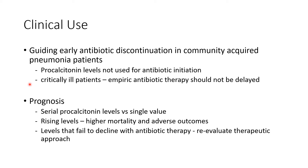The clinical use of procalcitonin levels is primarily in guiding early antibiotic discontinuation in community-acquired pneumonia patients. Pathogens causing CAP, like Streptococcus, Staphylococcus, and Haemophilus influenzae, cause the highest induction of procalcitonin levels. When serially measured, we can see whether the antibiotic is working and whether we can stop it early. It cannot be used as a measure for antibiotic initiation — in critically ill patients, empiric therapy is recommended and should not be delayed — but the duration can be guided by procalcitonin levels.